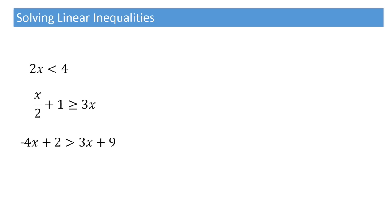To solve these inequalities, the good news is we follow the same steps as we would for linear equations. So for that first inequality, we'd follow the same steps as we would for 2x equals 4. For the second, we'd follow the same steps as x over 2 plus 1 equals 3x. And for the last inequality we see here, we'd follow the same steps as we would for negative 4x plus 2 equals 3x plus 9. But,